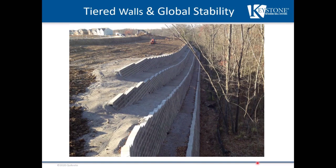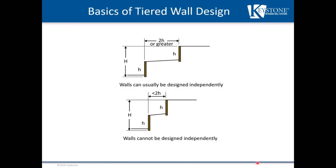Tiered walls and global stability — basics of tiered wall design. The rule of thumb in determining whether tiered walls can be designed independently is the 2H rule. If the distance between tiers is at least two times the height of the lower tier, the walls can likely be designed independently. If the separation is less than 2H, they cannot. For the 2H rule to be valid, the upper tier should be less than or equal to the lower tier height.